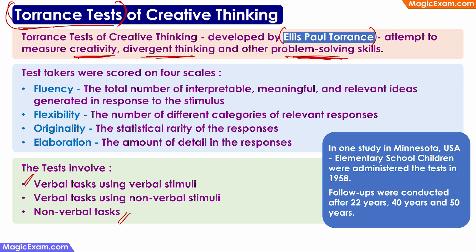Test takers are scored on four scales or four parameters. The first is Fluency — how meaningful and relevant is the idea or answer they have come up with. The second is Flexibility — if given the same kind of problem with different variables or scenarios, how flexible are they in coming up with an answer for the new situation. The third is Originality — is the solution original, or have they copied a previous answer or existing solution. The fourth is Elaboration — have they given just a basic idea, or have they provided details of how it can be implemented. So fluency, flexibility, originality, and elaboration are the parameters on which test takers are measured.